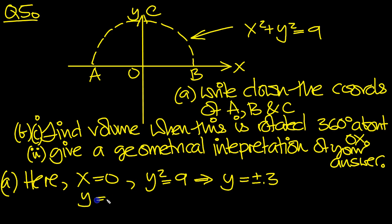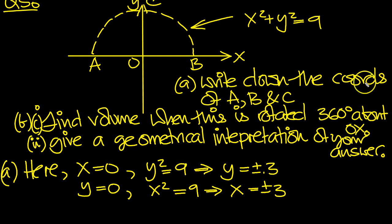And y equals 0. So when we put y equals 0 in here, we get x² = 9. So that tells us that x is equal to plus or minus 3. So we can see what the coordinates are then.